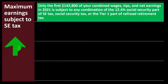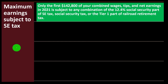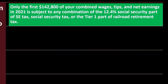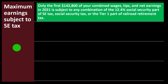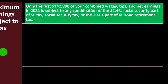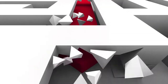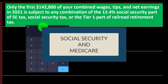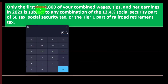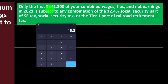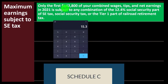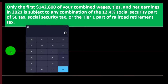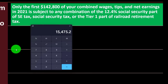Maximum earnings subject to self-employment tax: only the first $142,800 of your combined wages, tips, and net earnings in 2021 is subject to any combination of the 12.4% Social Security part of the self-employment tax, Social Security tax, or the Tier 1 railroad retirement tax. That's why you have to break out Social Security from Medicare — Social Security has that cap of $142,800. So if you made $200,000 net on Schedule C, the Social Security portion would be capped at $142,800 times 0.124.